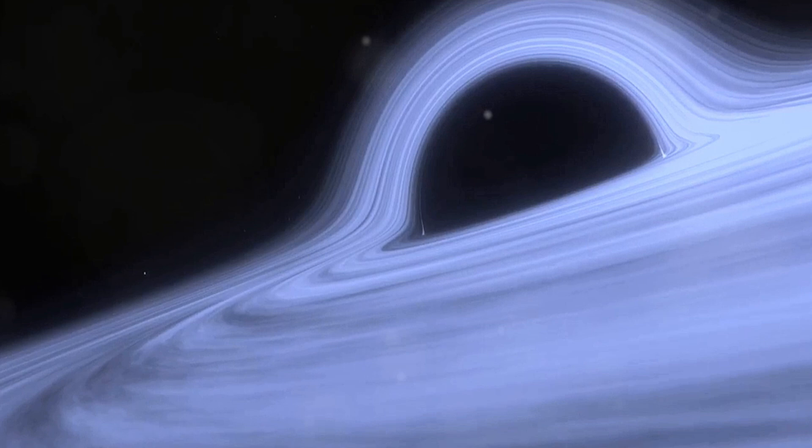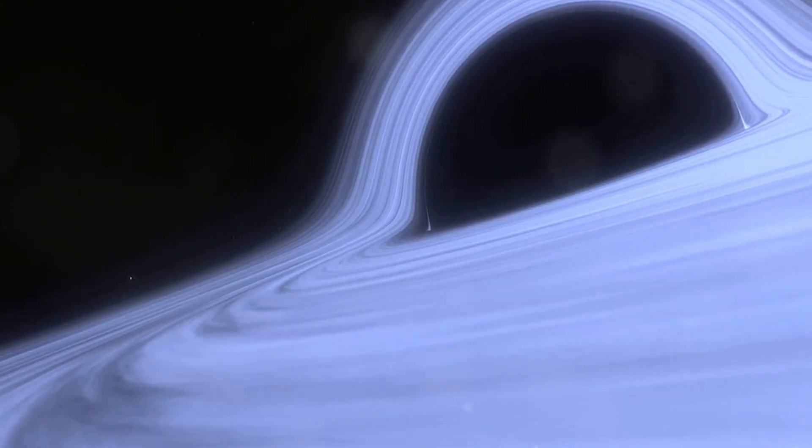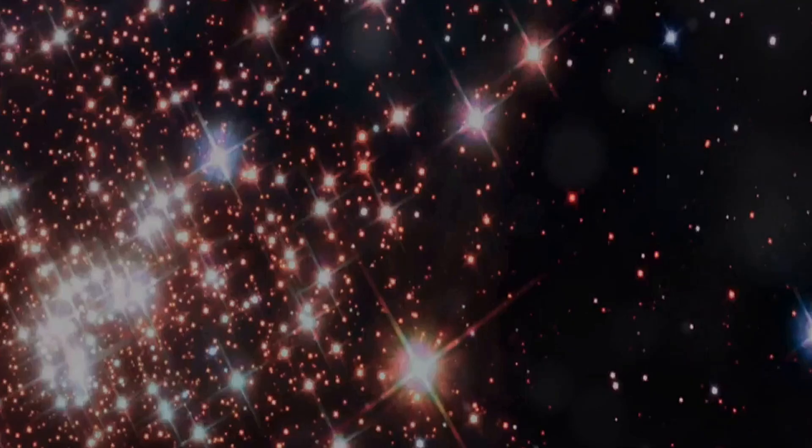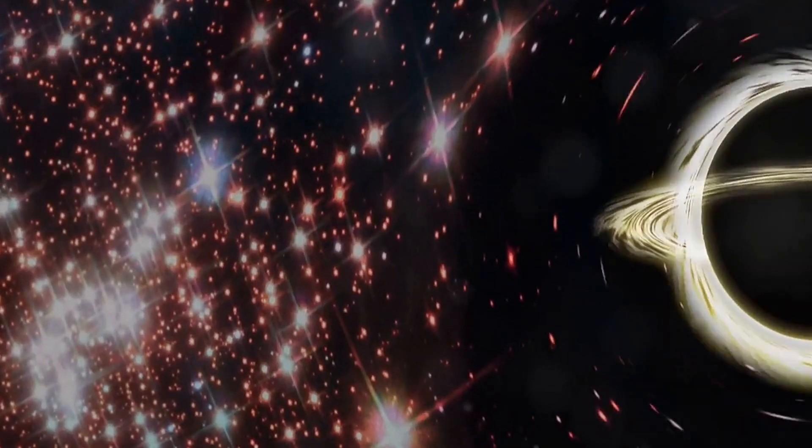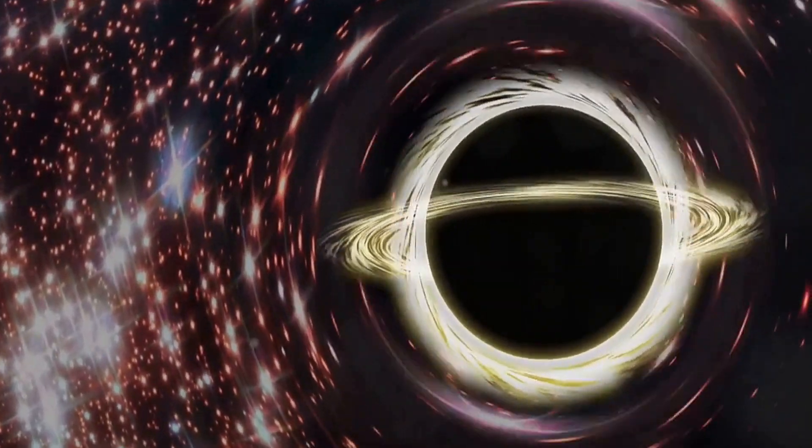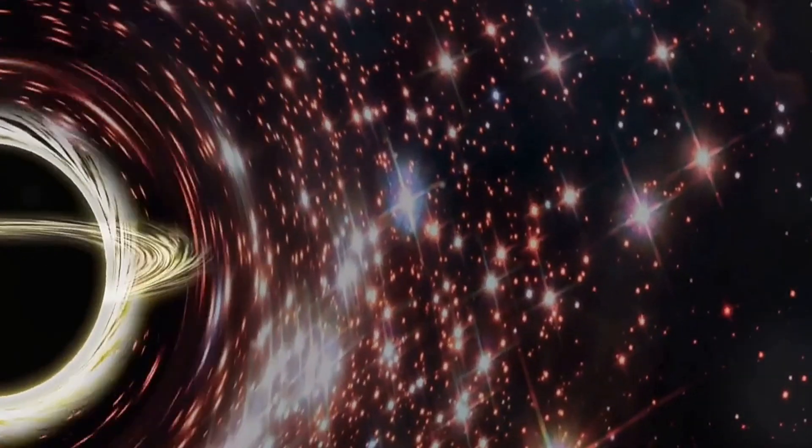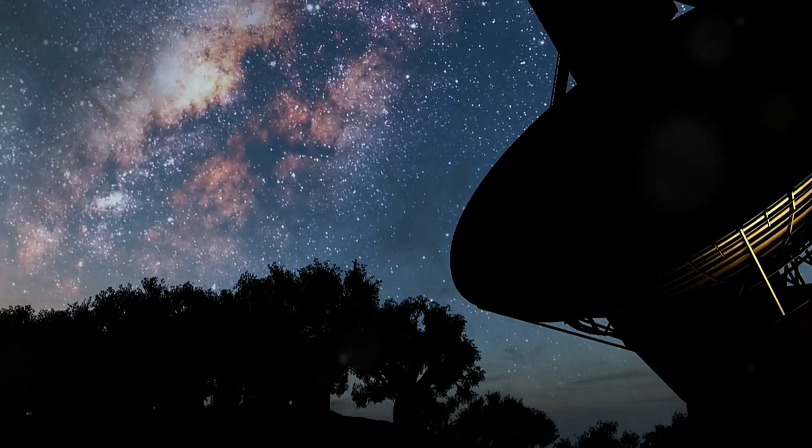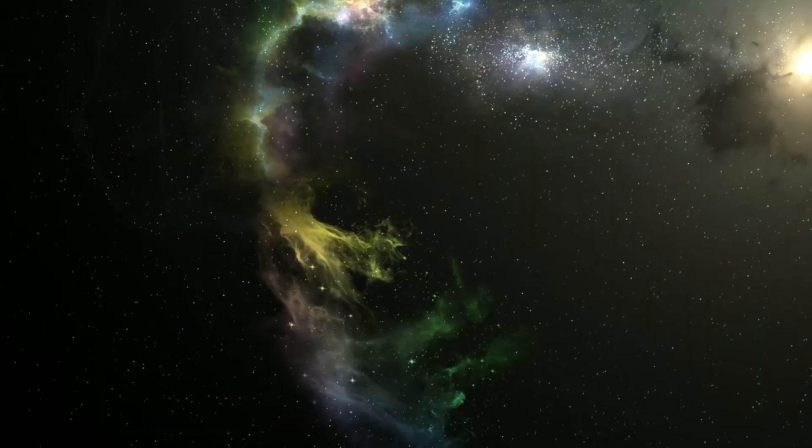A flat universe will continue to expand forever, while a positively curved universe will eventually collapse under its own gravity. The CMB's imprint on the geometry of the universe provides a powerful testament to the interconnectedness of space, time, and matter. By studying this ancient light, we can discern the shape of the cosmos and gain a deeper understanding of its fundamental nature.